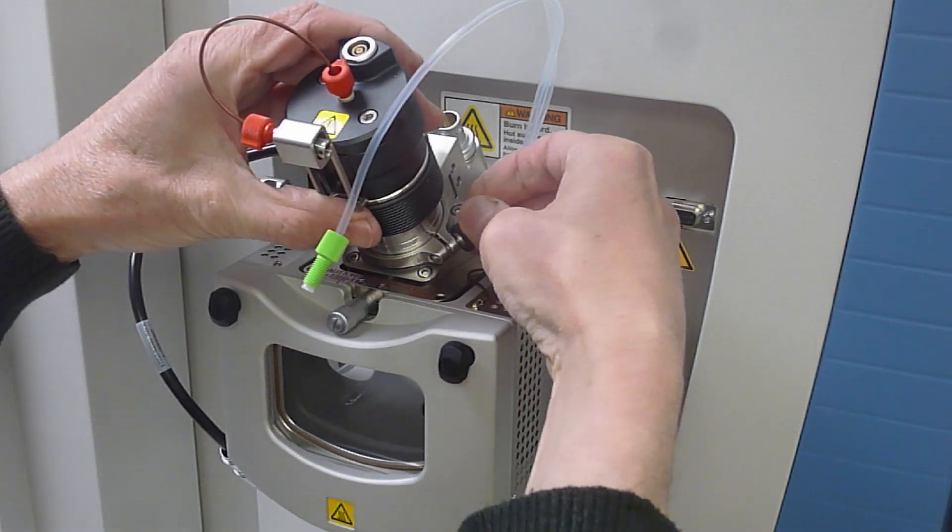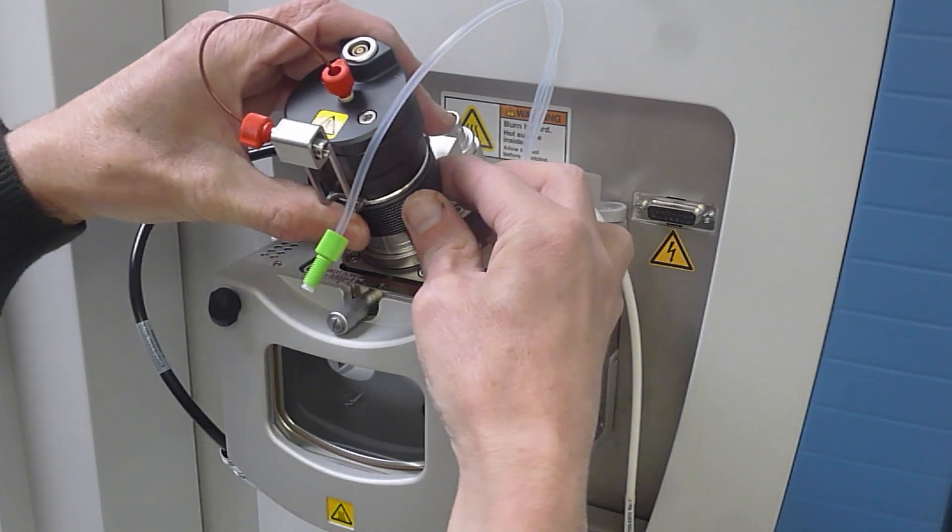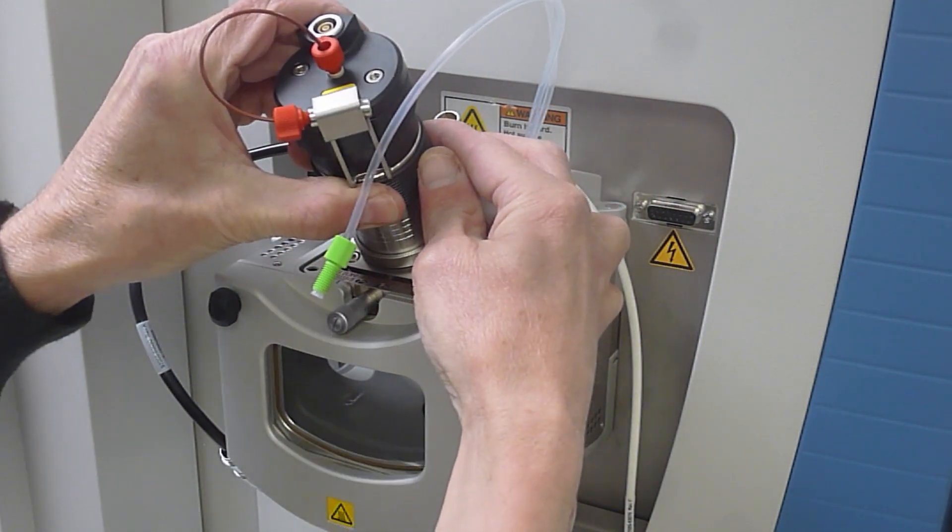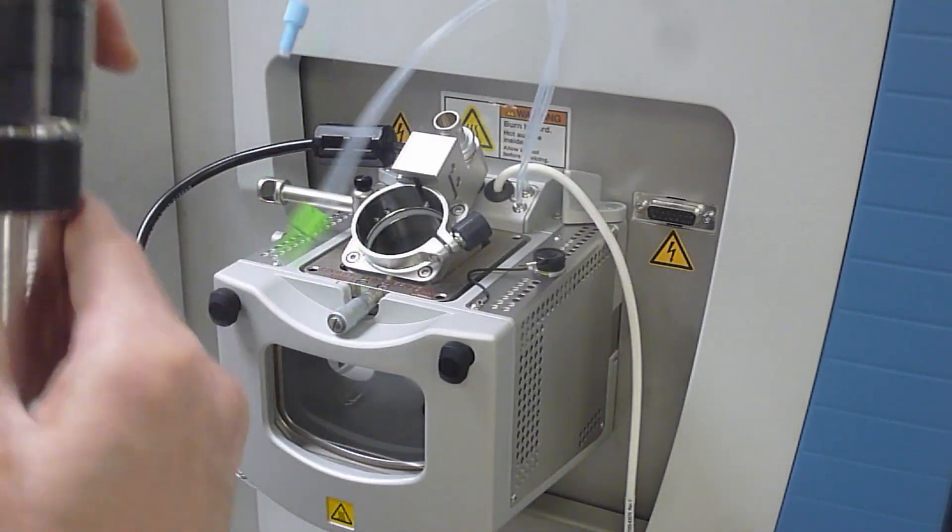Loosen the black knurled screw. Pull the probe towards you until it stops, then turn it anti-clockwise and continue to pull to remove it completely.